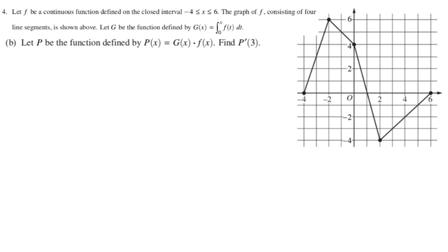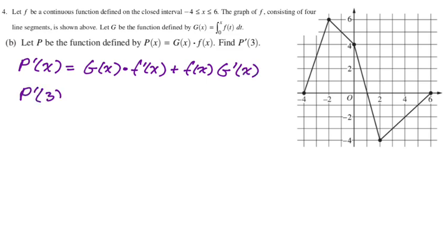Find p prime of 3. So this is just the product rule. So p prime is going to be first, which is g(x), derivative of the second, which is f prime, plus second, which is f, and then derivative of the first, which is g prime. Now the key is we've got to find a bunch of values. So we're plugging in 3. So we need to know g of 3, we need to know f prime of 3, we need to know f of 3 and g prime of 3. All of these things we need to know.